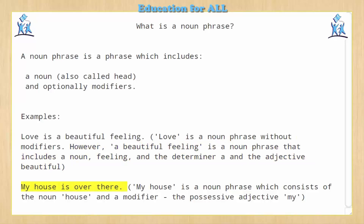My house is over there. 'My house' is a noun phrase which consists of the noun 'house' and a modifier, the possessive adjective 'my'.